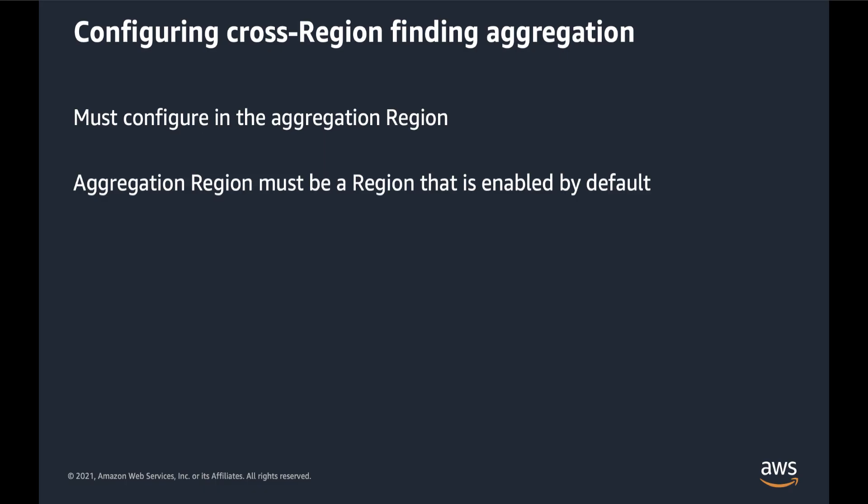Let's show you how to set up cross-region finding aggregation. To start, you must configure the aggregation in the region that you want to be the aggregation region. The aggregation region must be a region that is enabled by default.